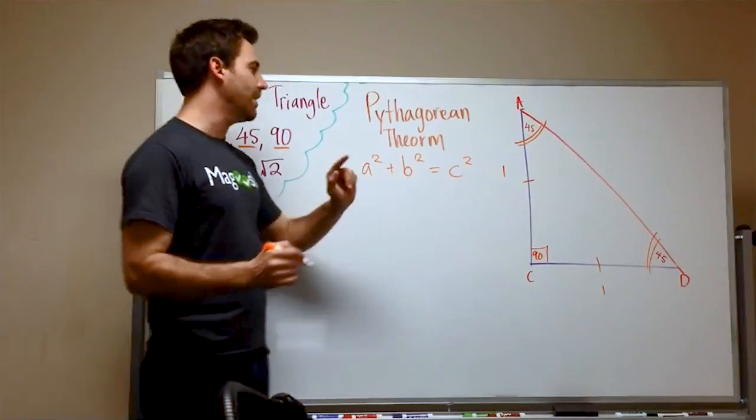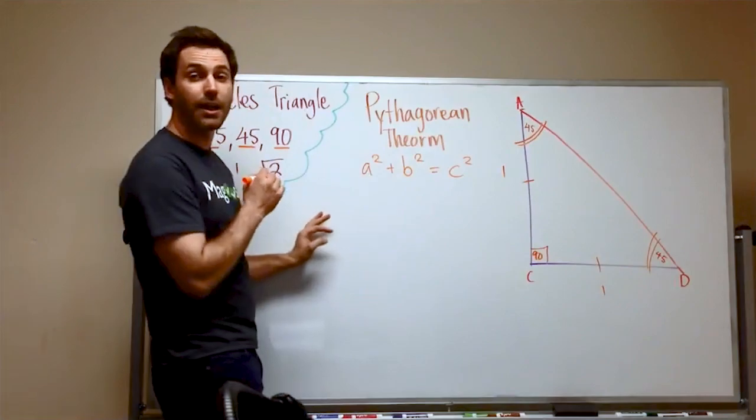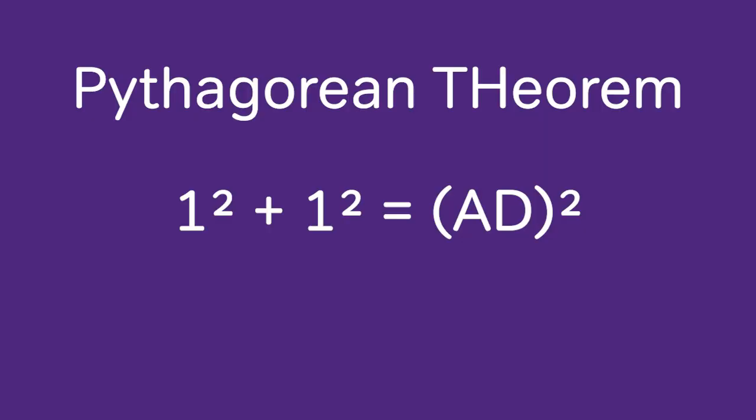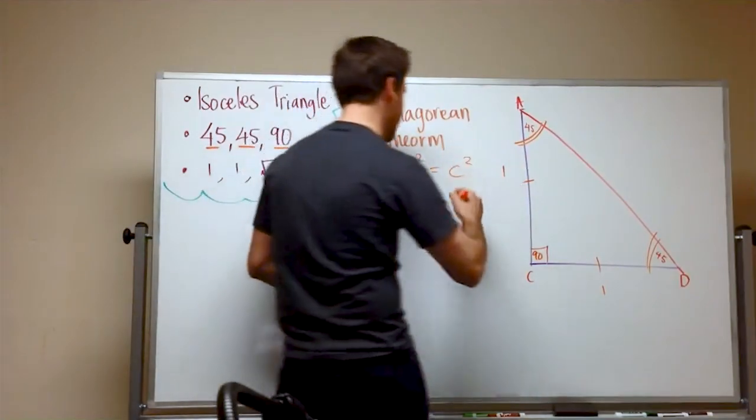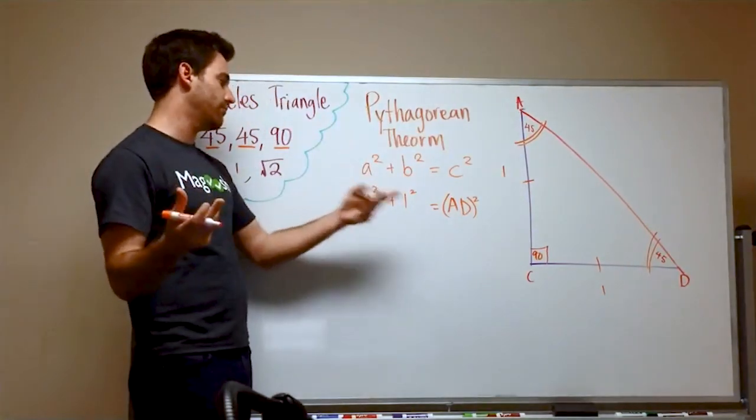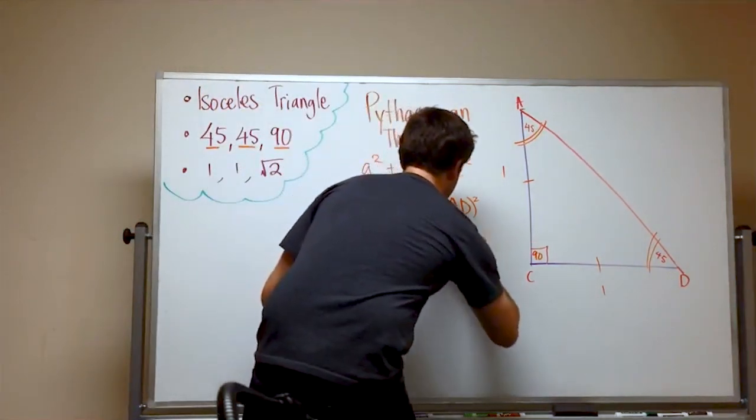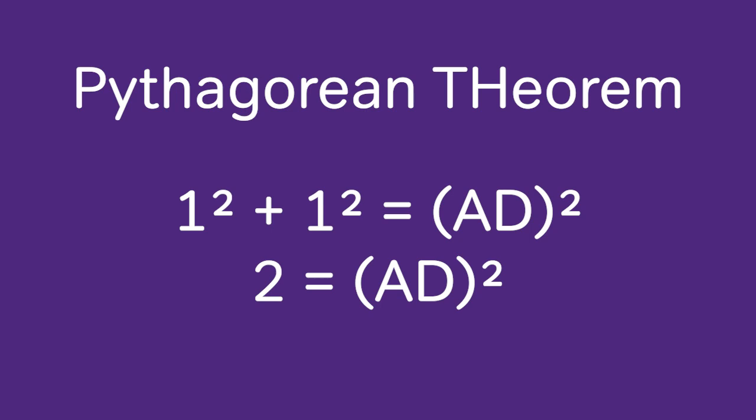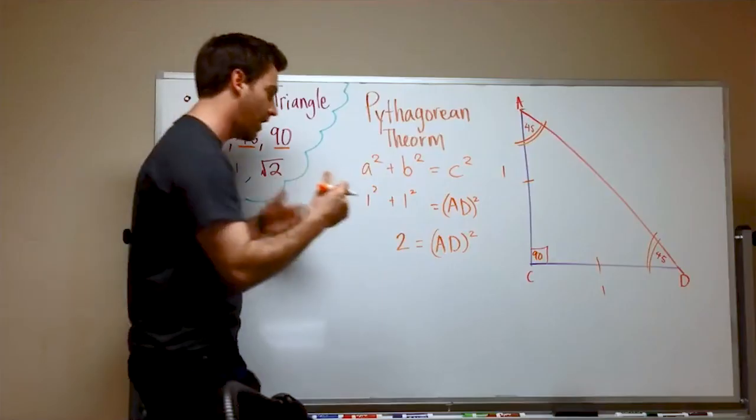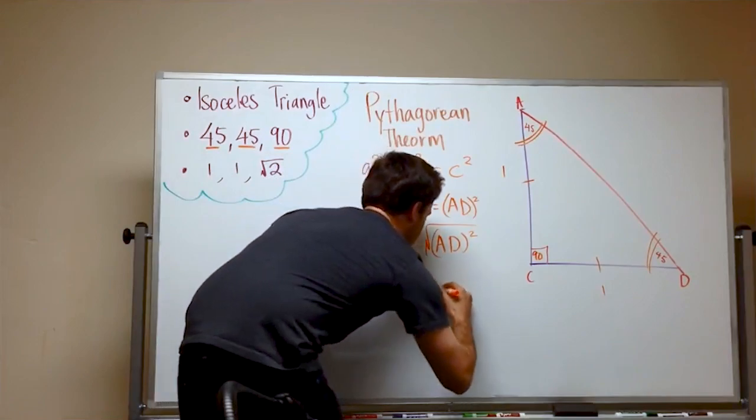So, the A and the B, that is our side. And C is going to be the hypotenuse, which is this. And so, we're just going to plug in what we have. We have 1 squared plus 1 squared equals, and here, I'll just put the side AD, AD squared. Now 1 squared is 1, and 1 squared is 1, and 1 plus 1 is 2. I know this is tough math. Stick with me. And so, we have 2 equals AD squared. And then to get rid of the square, we need to take the square root. So, then we end up with AD equals square root 2.